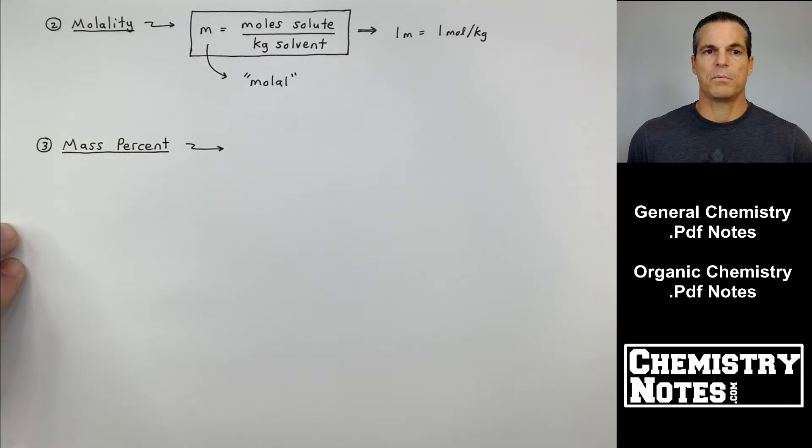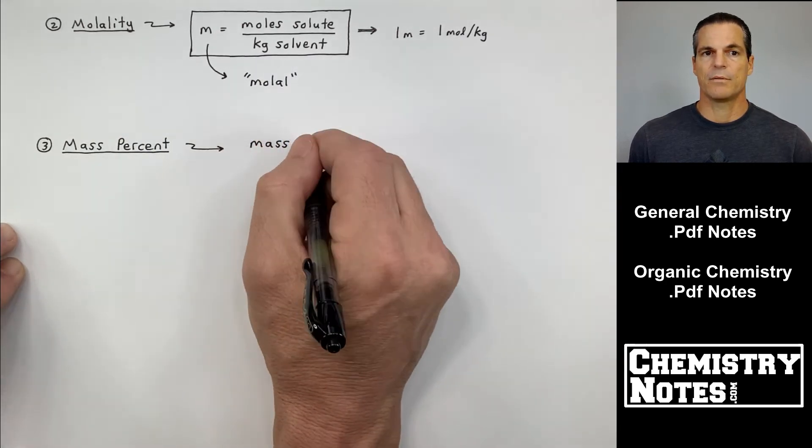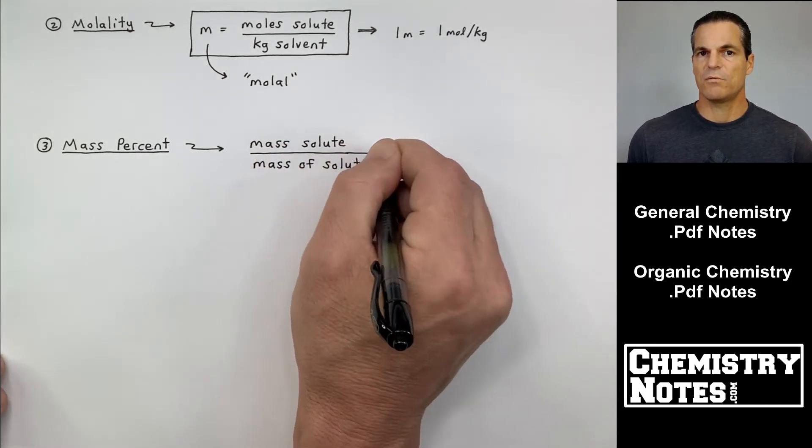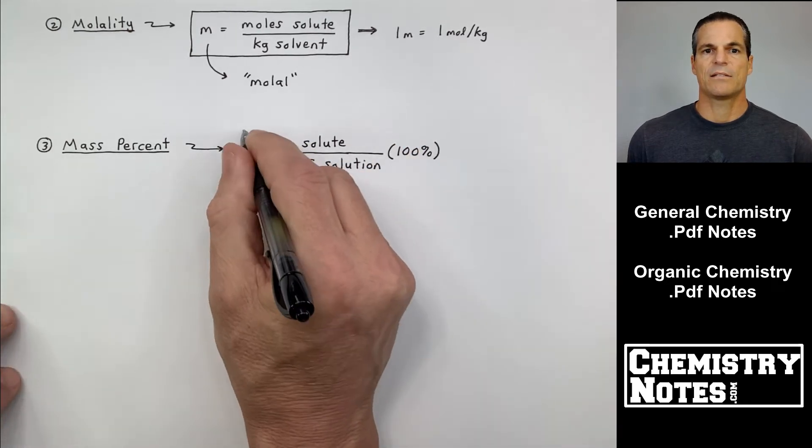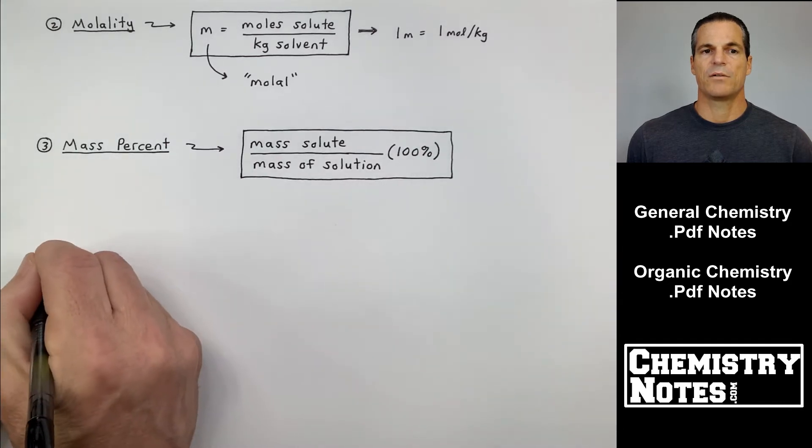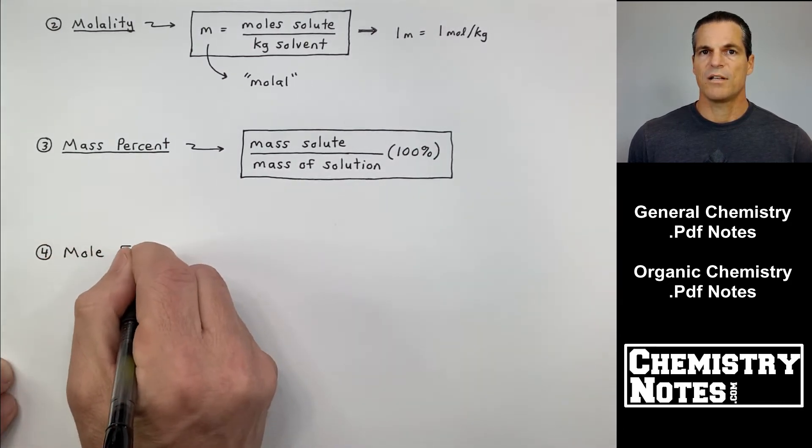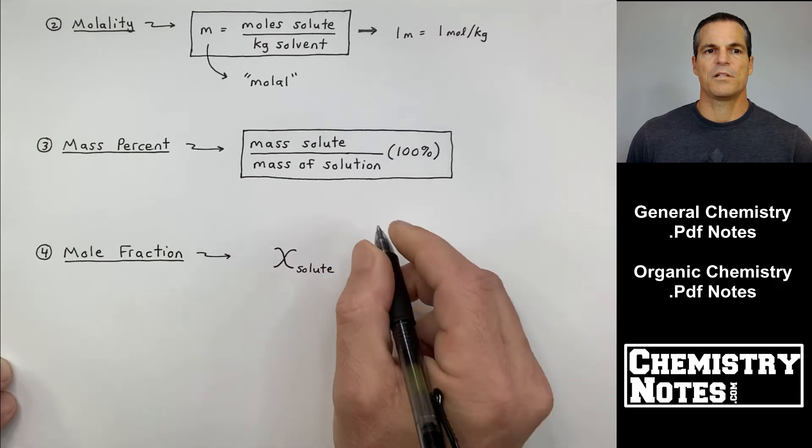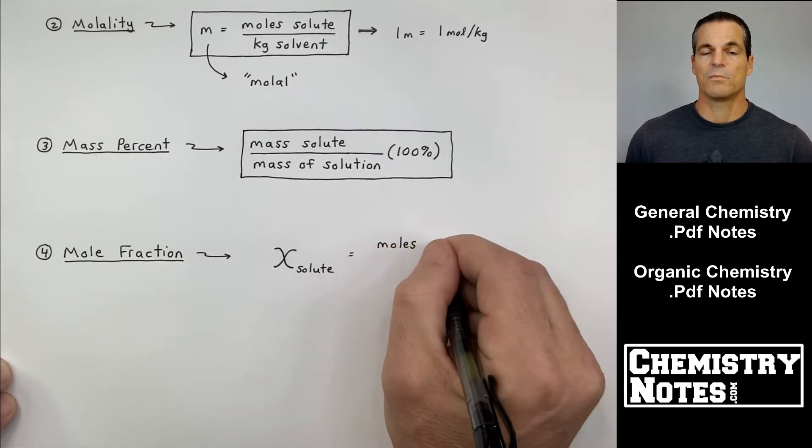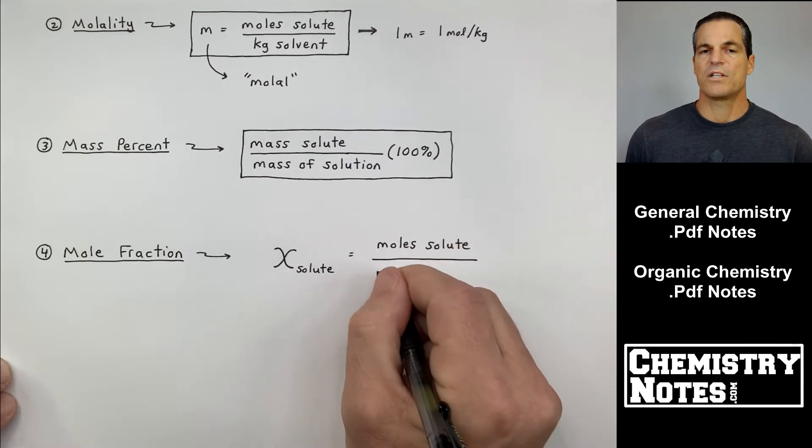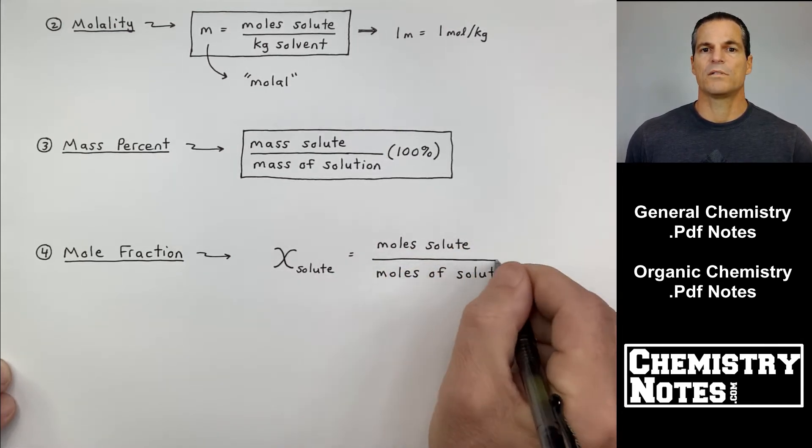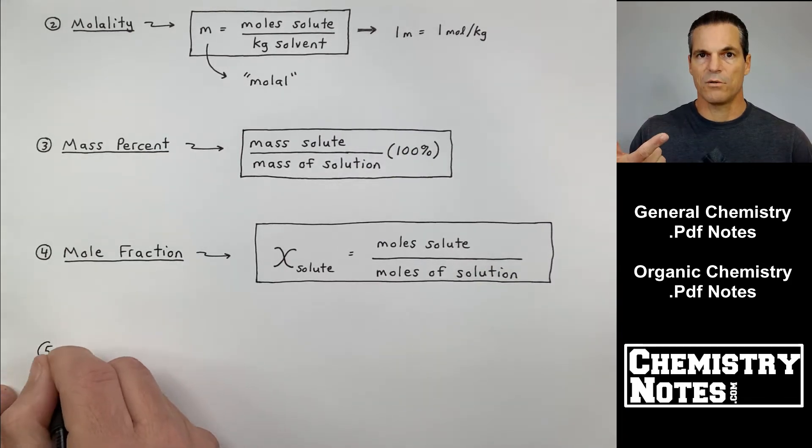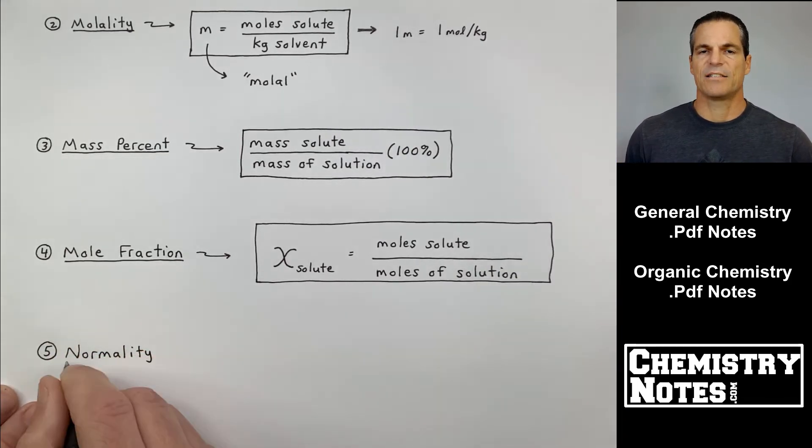Number three, mass percent, it's probably number two in popularity behind molality. Mass percent is the mass of the solute in grams divided by the mass of the solution in grams times 100%. That denominator, mass of solution, includes solute and solvent. Number four, mole fraction. The mole fraction is moles of solute divided by the moles of solution. In other words, moles of solute divided by moles of solvent plus solute. That little funny looking x is the Greek symbol chi.